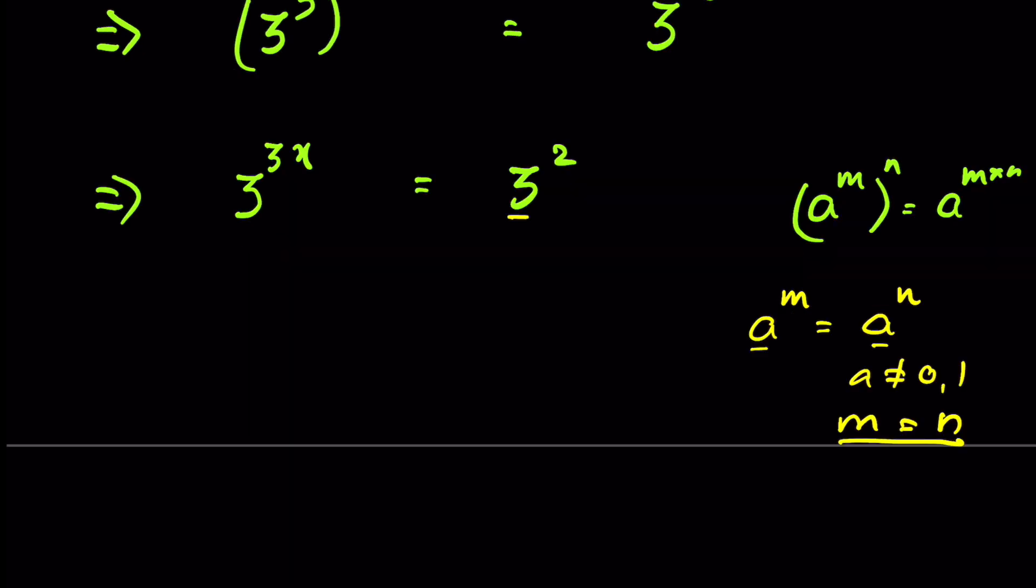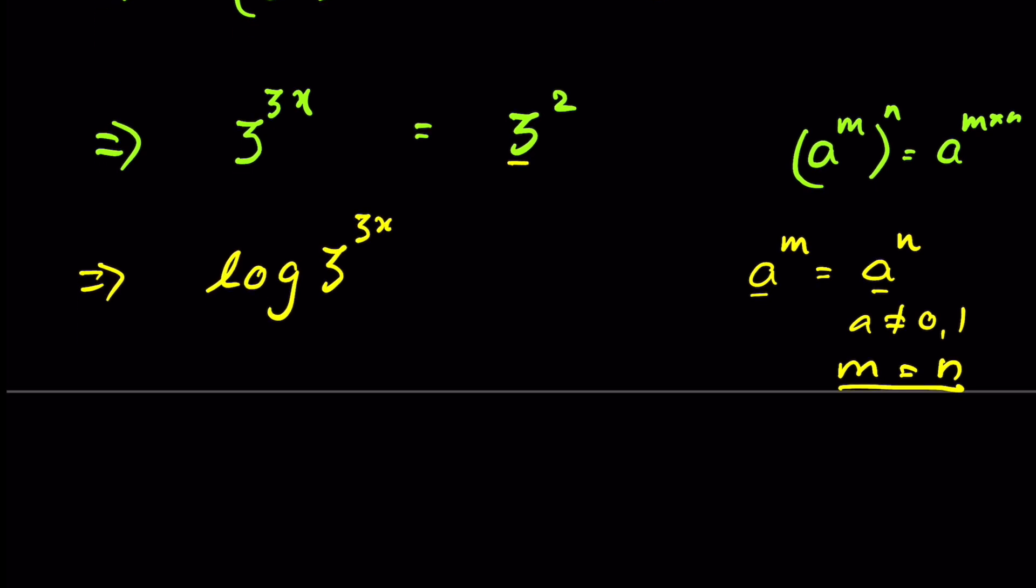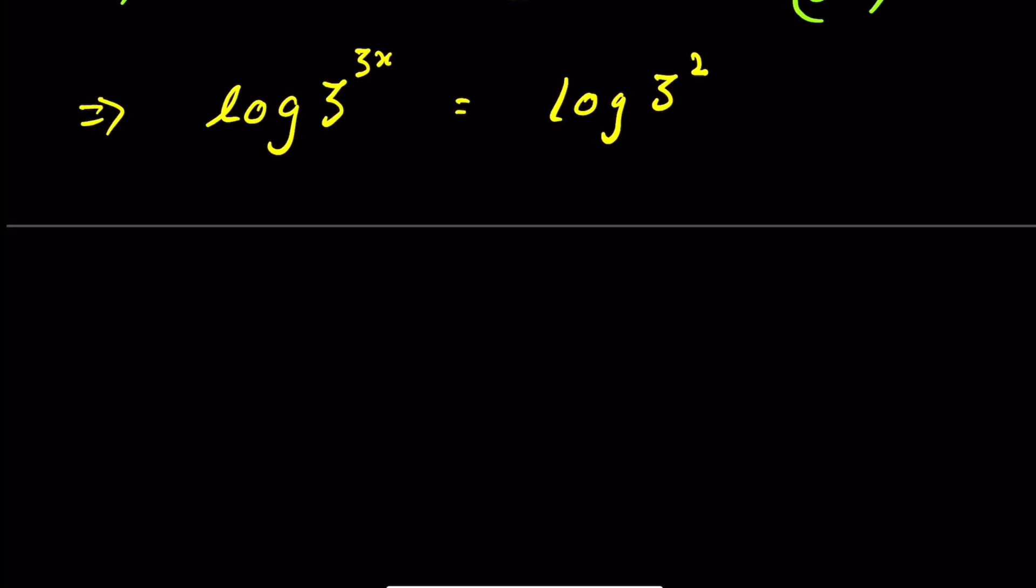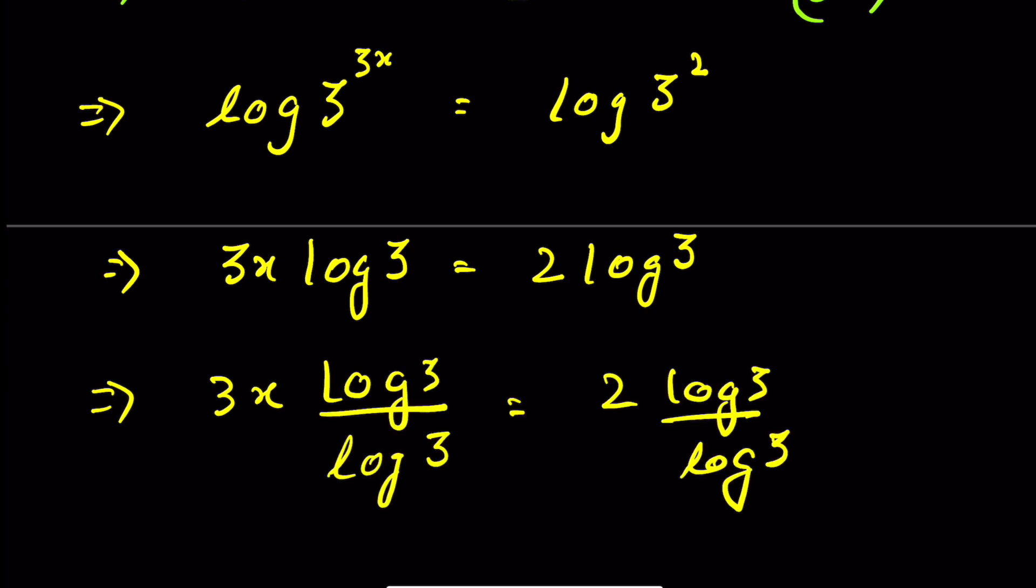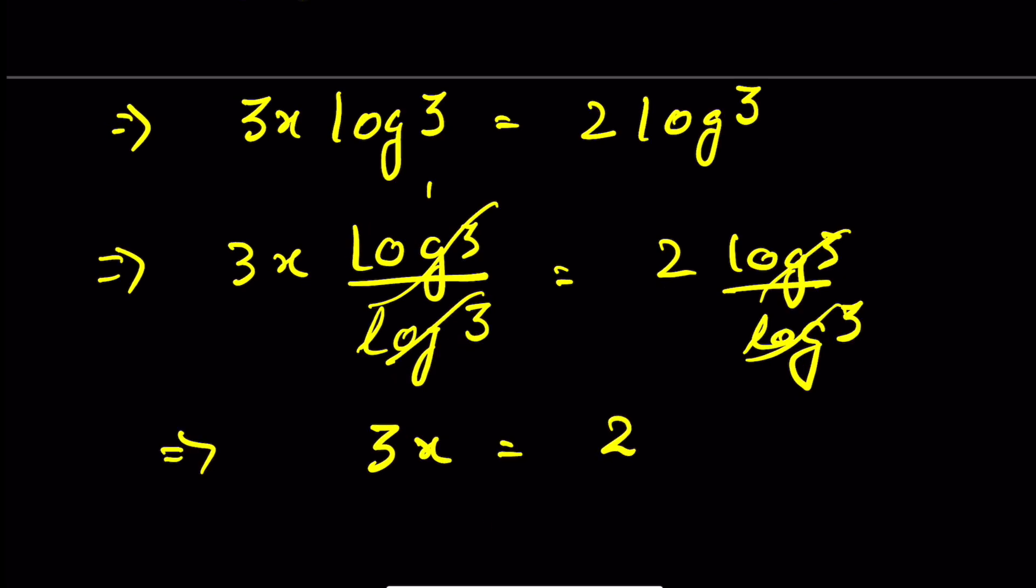If we take log to both sides, then it will be log 3 to the power 3x is equal to log 3 square. Now we know log a to the power b is equal to b log a. 3x log 3 is equal to 2 log 3. Let's divide both sides by log 3. We can cancel these two, equal to 2, or x is equal to 2 upon 3.